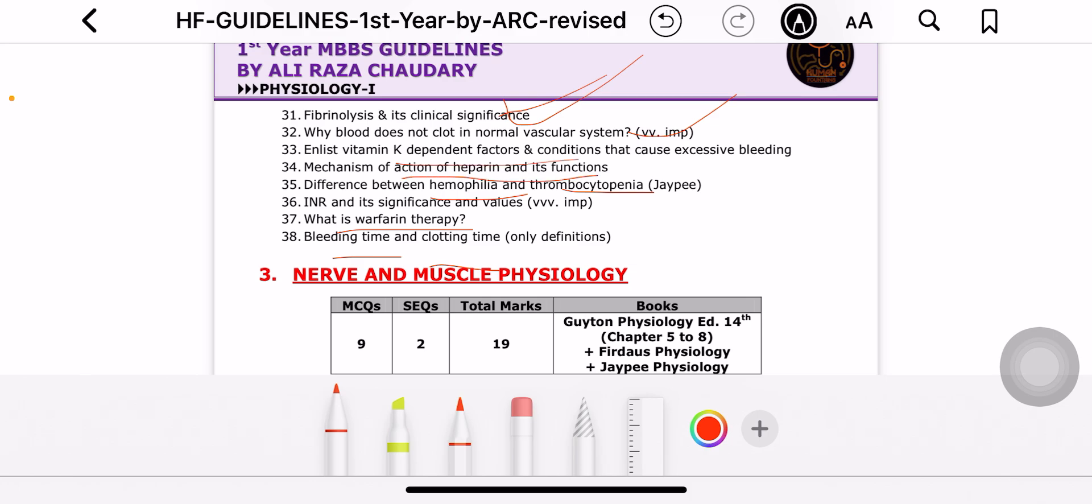Now guys, the blood physiology I have already told you is very important. When you go through the guidelines, don't forget your past papers. Past papers are important for every topic. If you have to prepare for blood, if you have a difficult paper, it gives you scenarios.